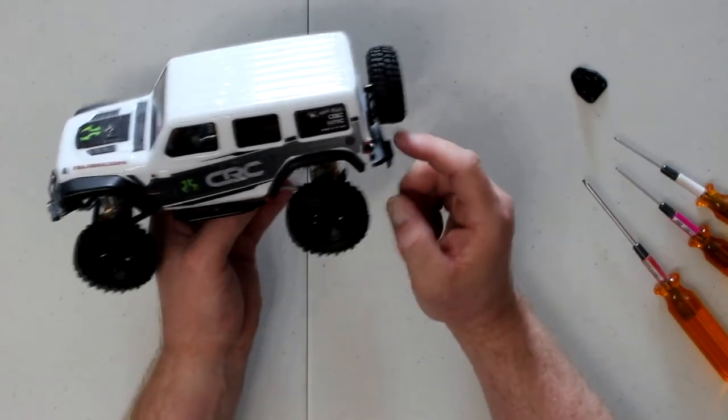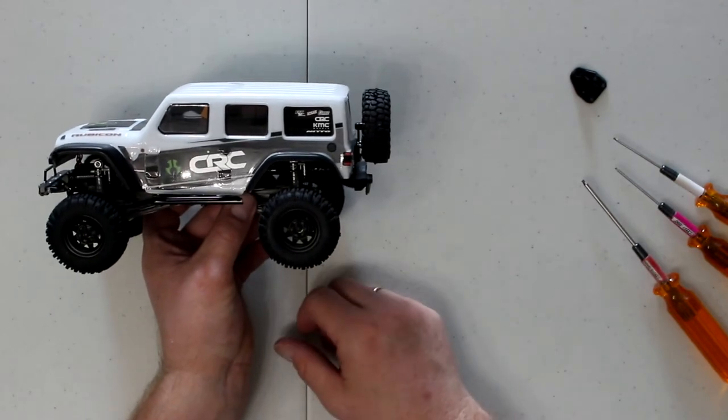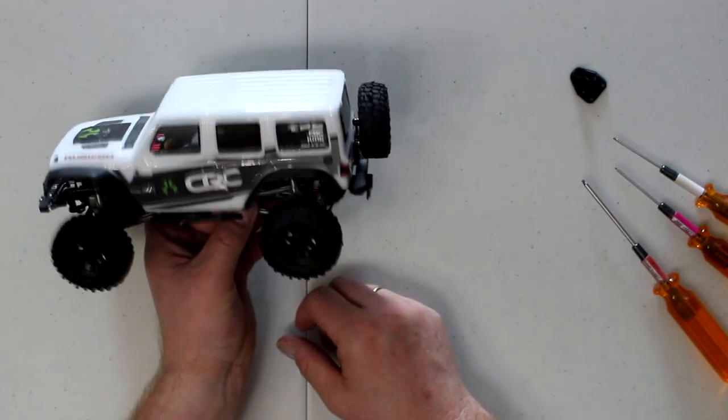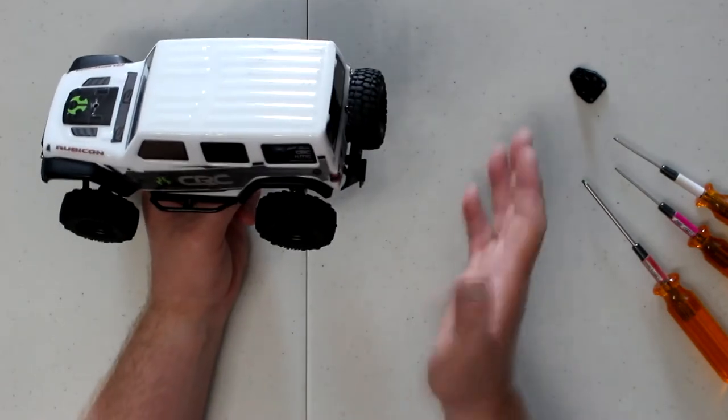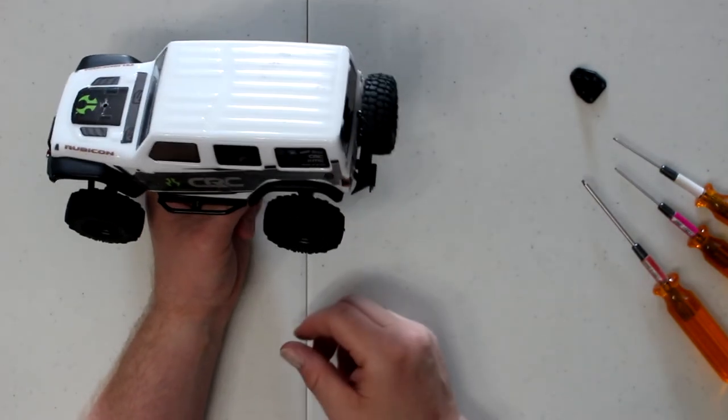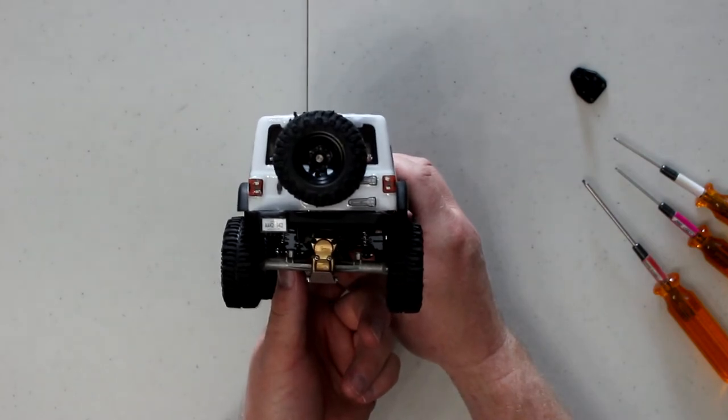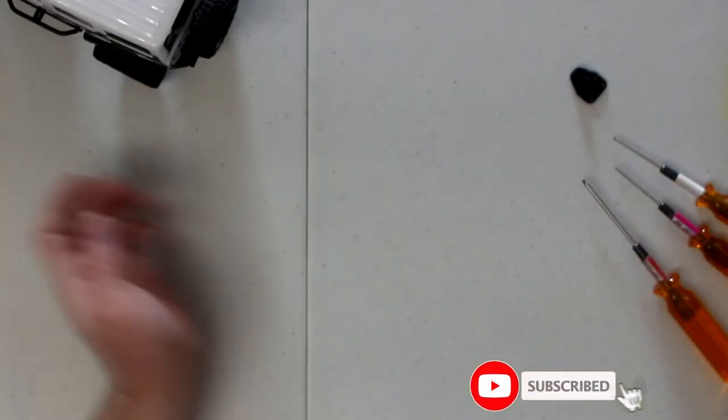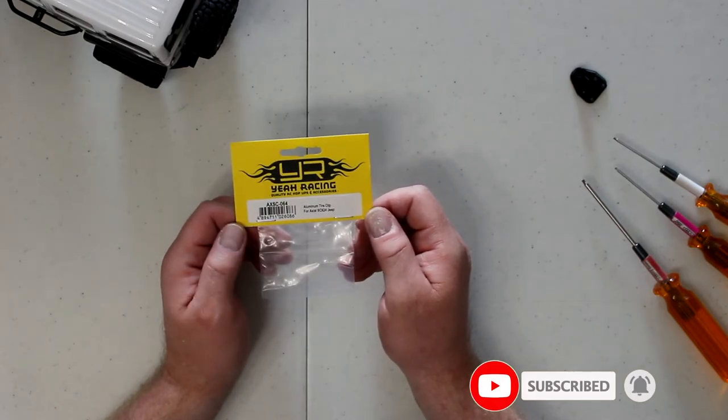I might remove the extra plastic, but I'll see how I like it. It puts it a lot further out of the door. Like a normal Jeep, your back tire is not sitting on your back window. I'll see. But this is the Yaw Racing aluminum tire clip for the Axial SCX1024.